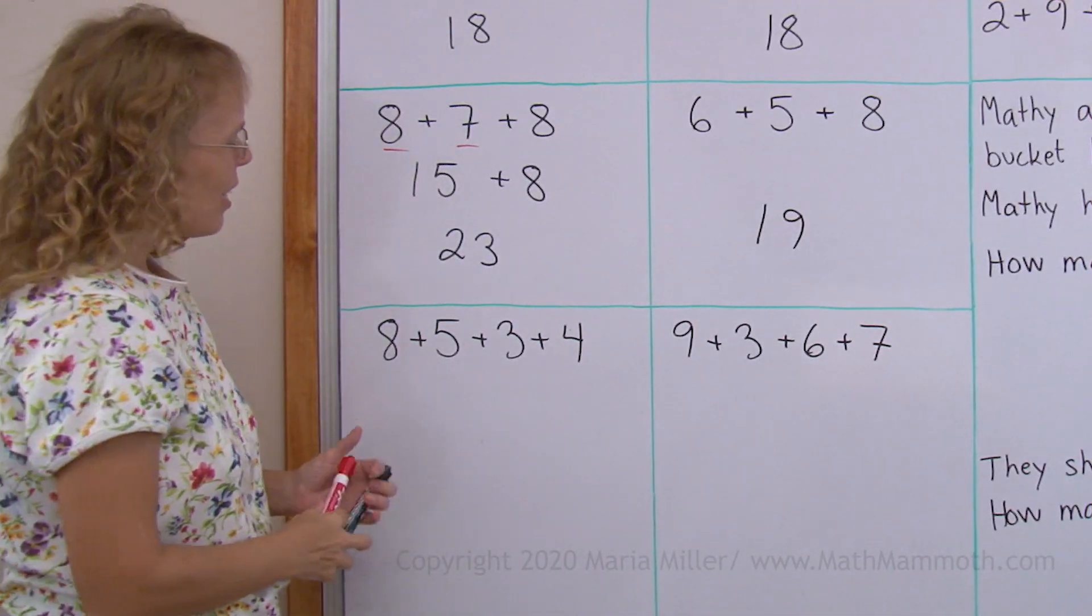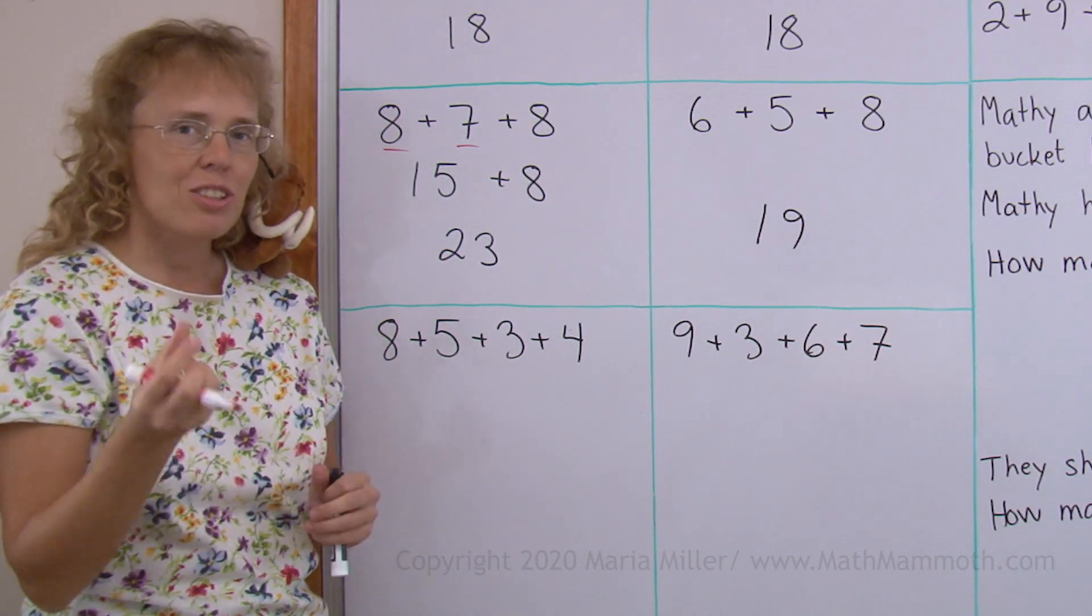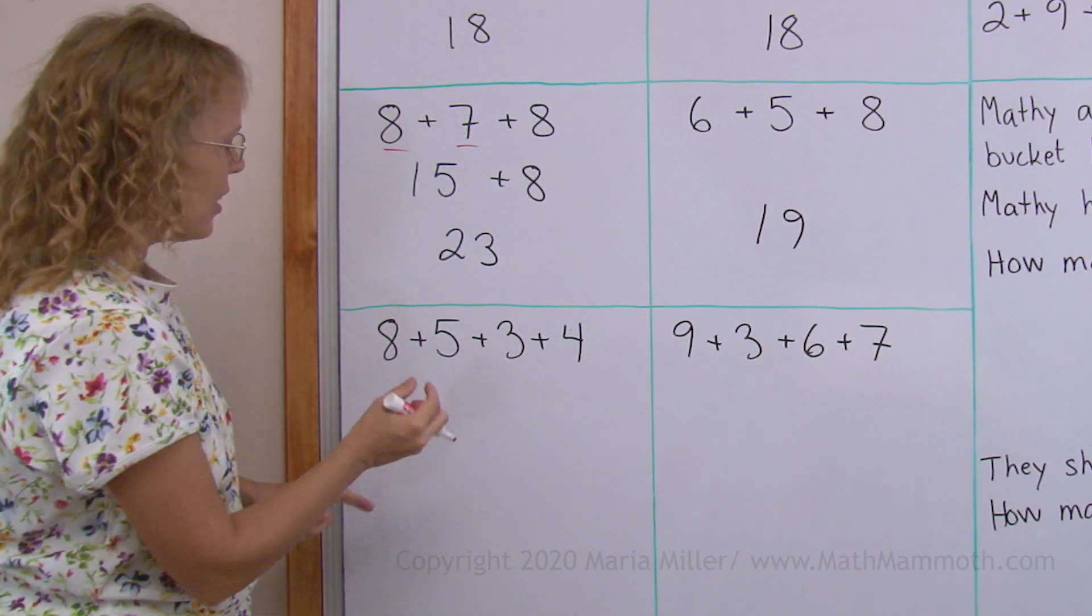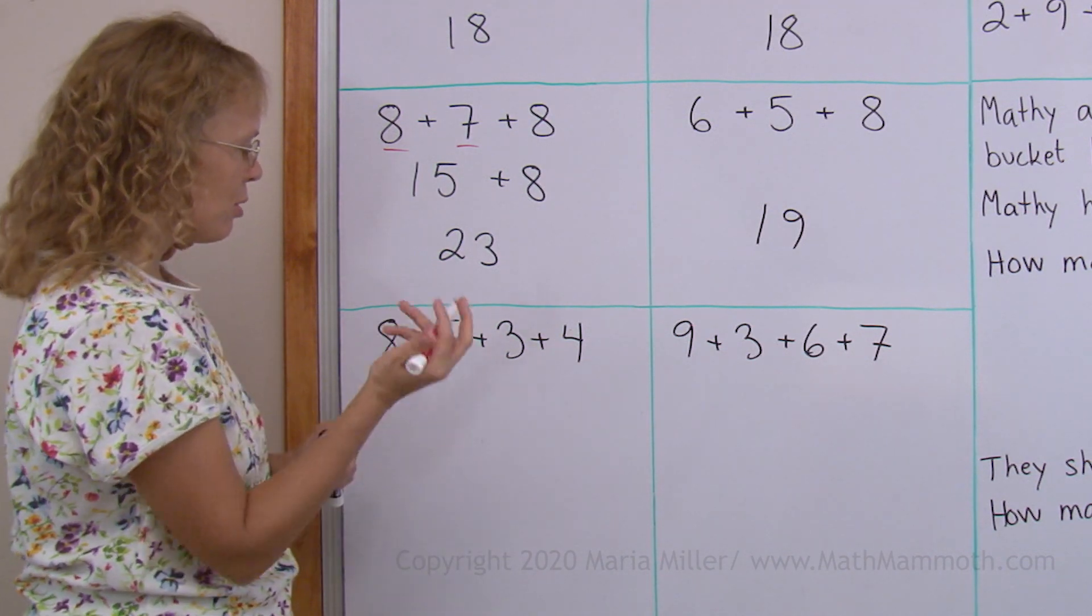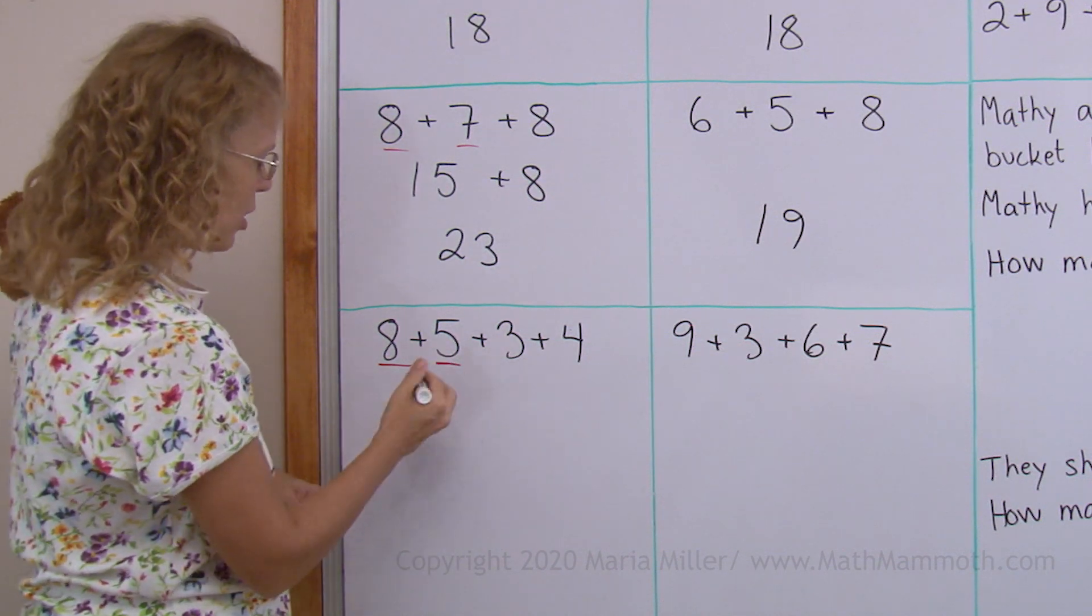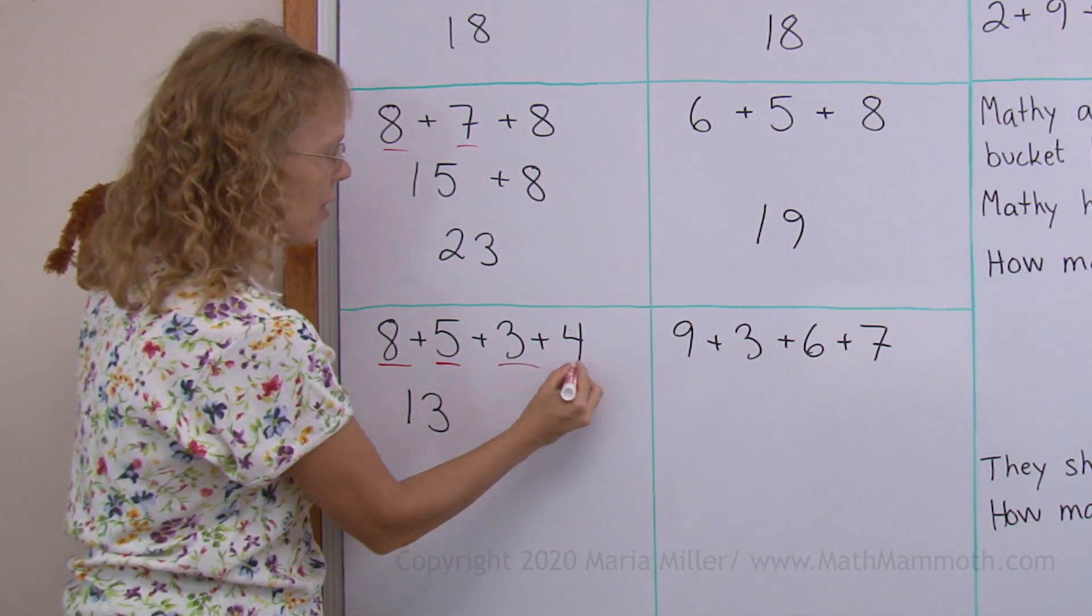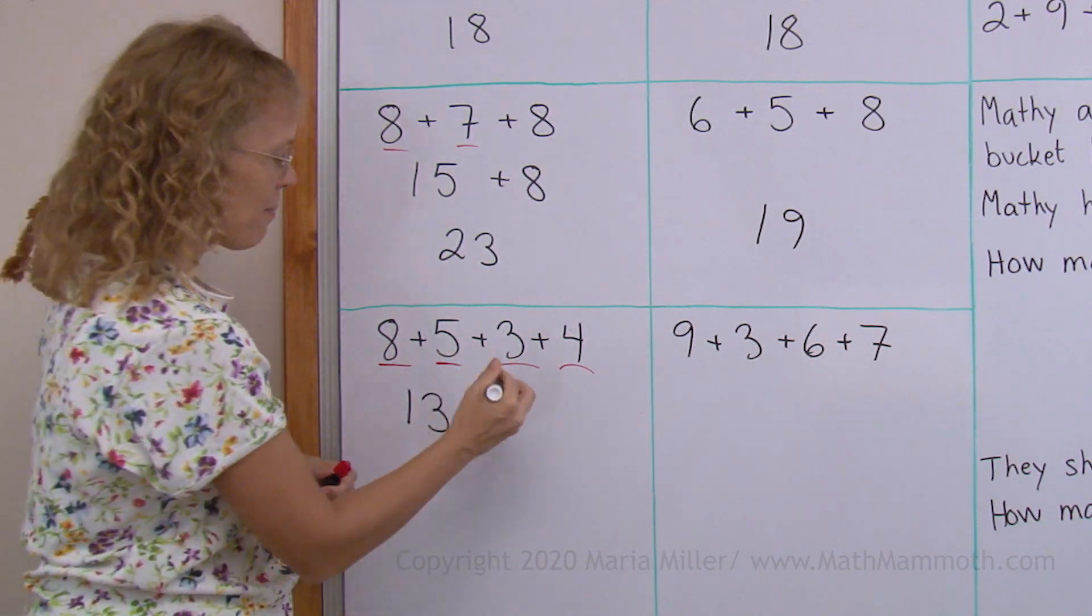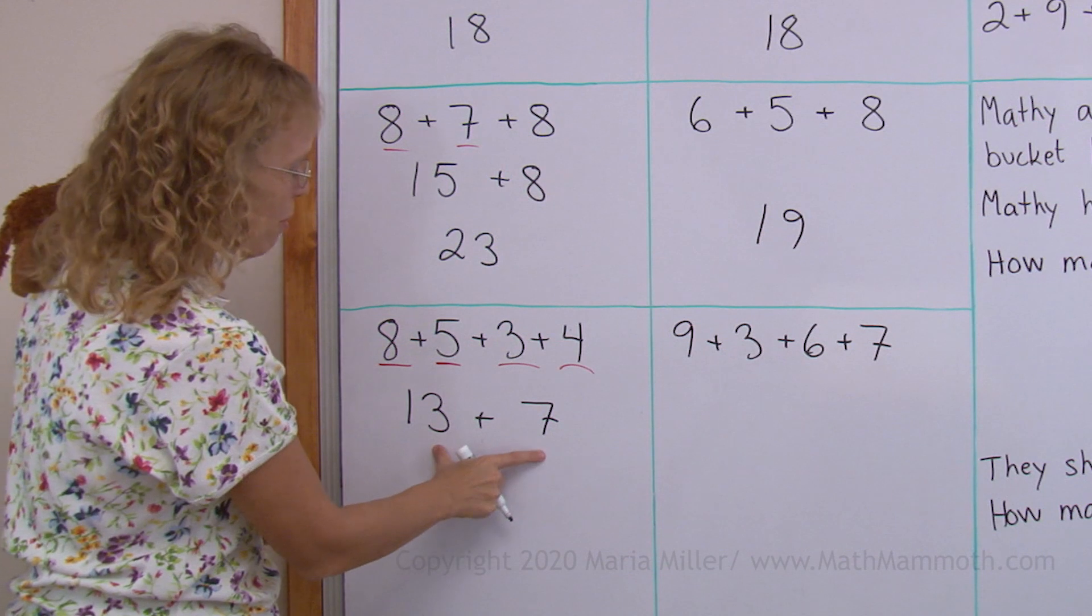4 numbers. One way to add 4 numbers would be that you add them in pairs, 2 and 2. Choose 2 numbers from here to add that seem easy for you to add. Maybe you add these 2. So we get 13. And then add these 2, which is 7. And now we have 13 plus 7. 3 plus 7 is 10, so this makes 20.